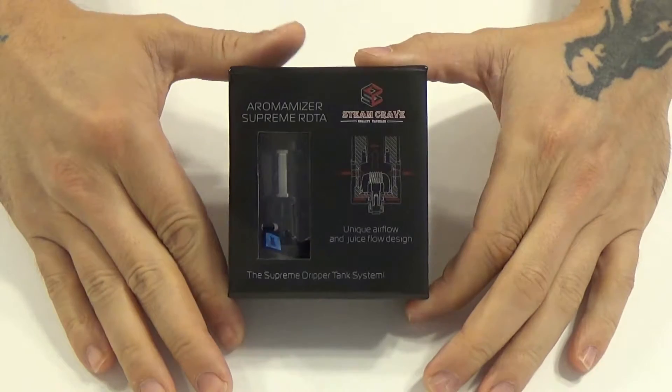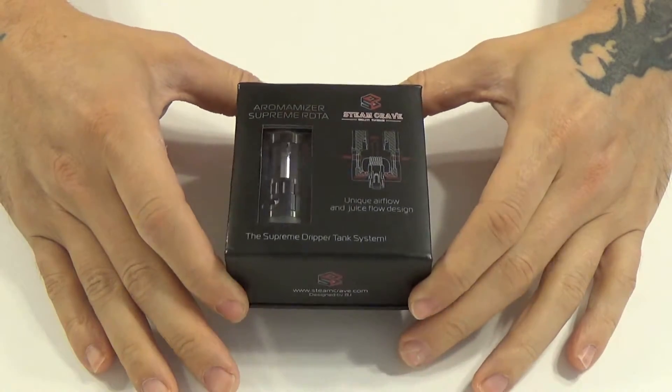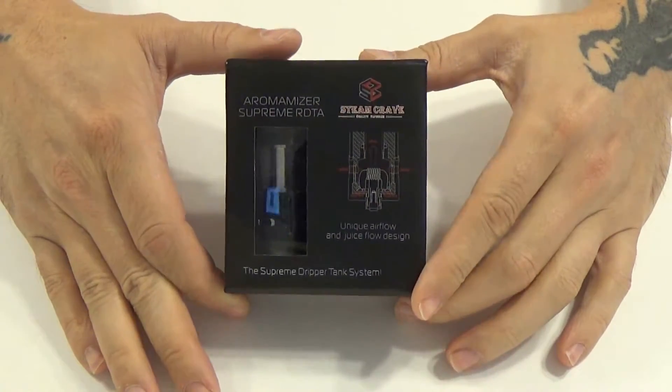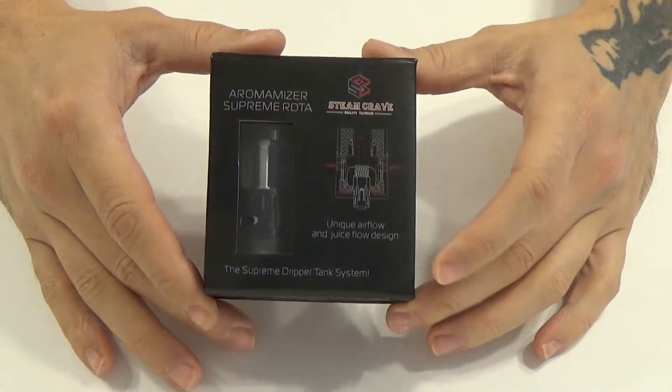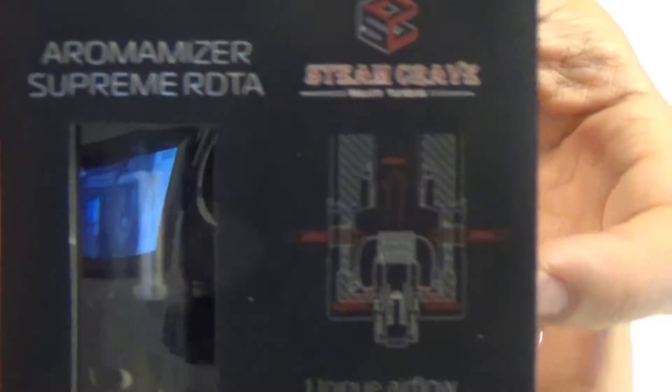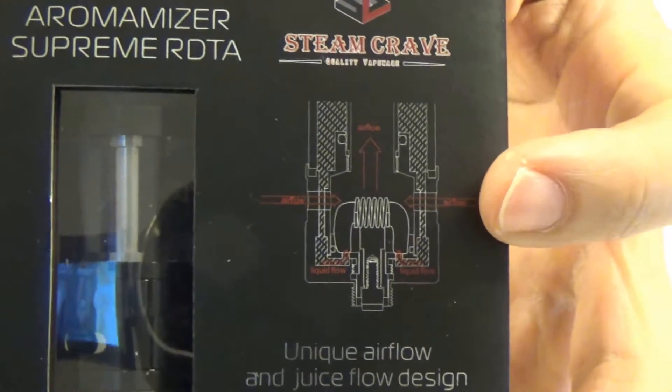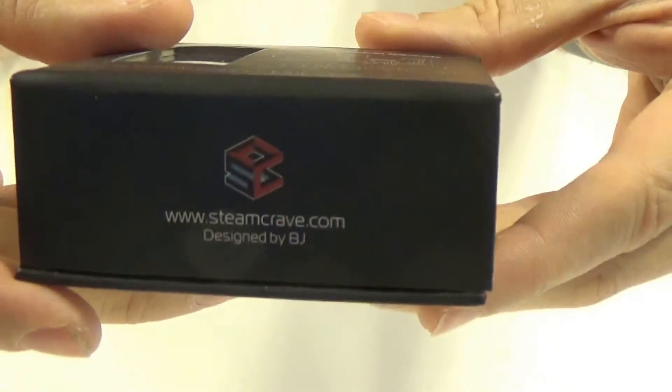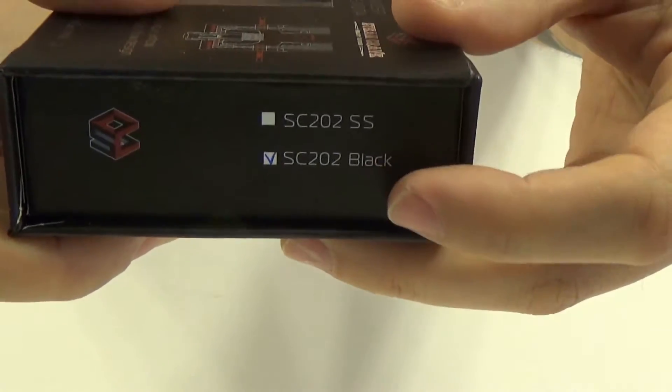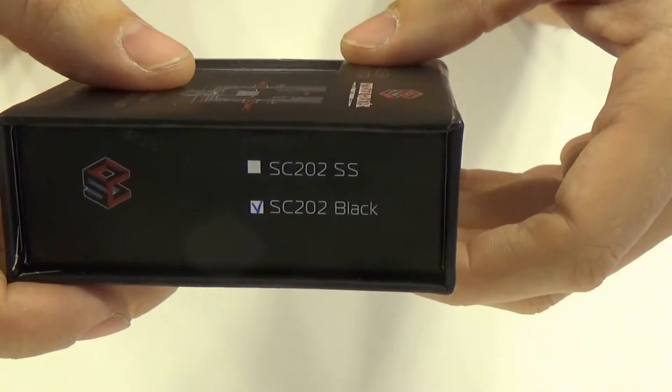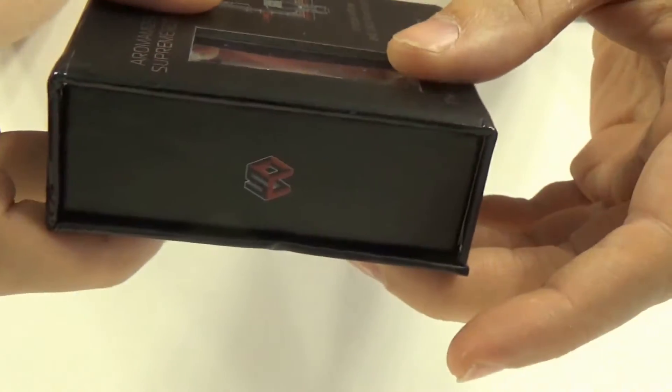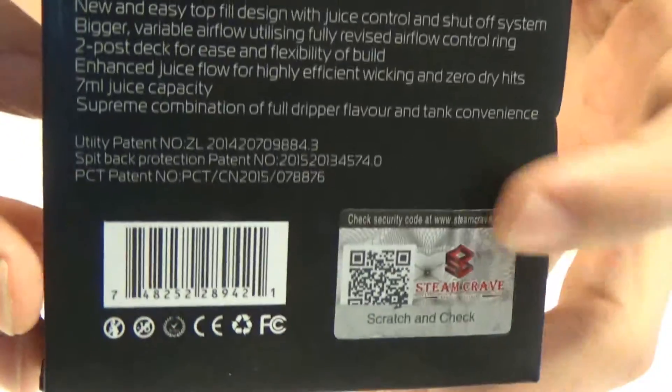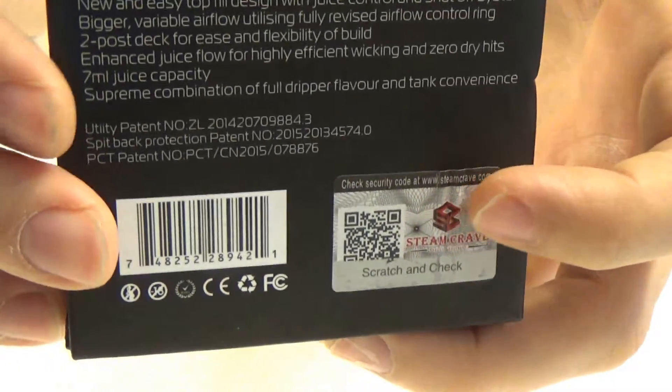Here we are up close with the Steam Crave Aromamizer Supreme RDTA. This is the packaging it comes in. There's quite a bit going on on the box. You have the picture of the deck breakdown there, see-through window, front panel, bottom, side. It tells you which color tank you got, stainless or the black. This is the black one. On the back gives you a little breakdown of the tank, has your scratch and sniff code, QR code.